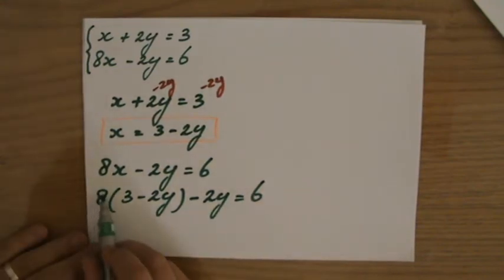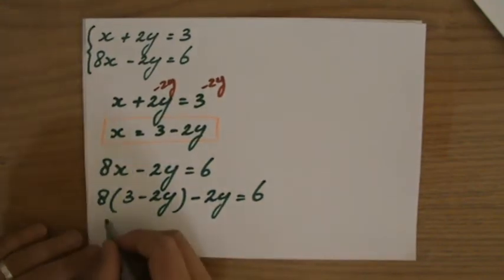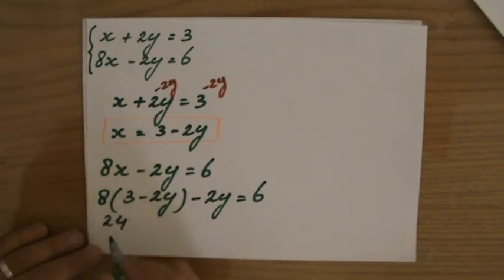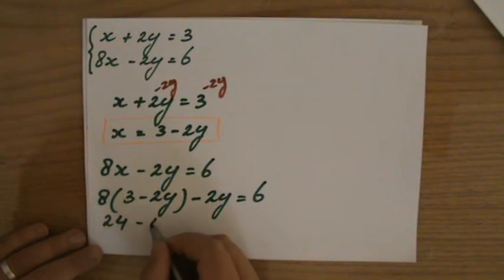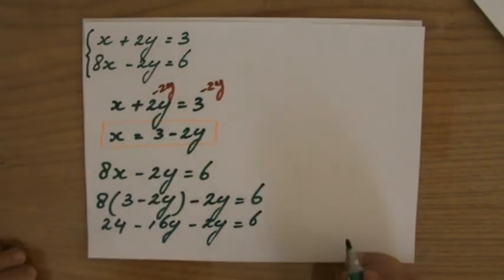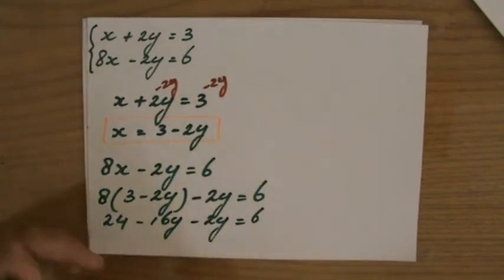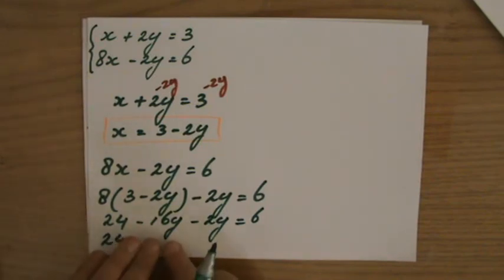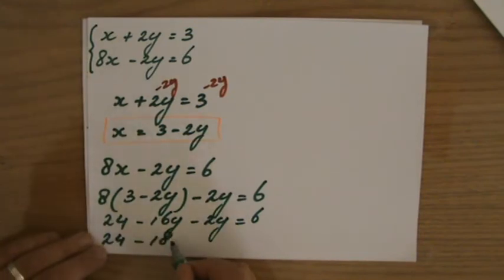First I have to expand. 8 times 3, that is 24. 8 times minus 2y, that is minus 16y. And then I have minus 2y equals 6. Now I am simplifying the left side. Let me write down 24 minus 16y minus 2y, that is minus 18y. And that should equal 6.